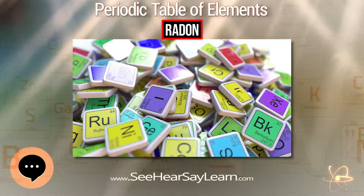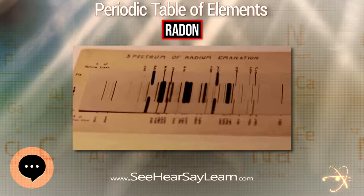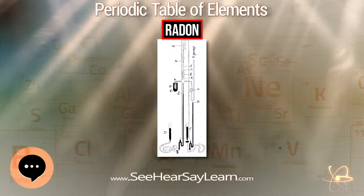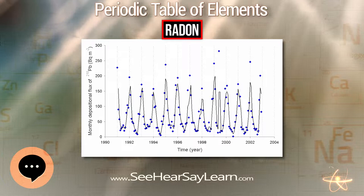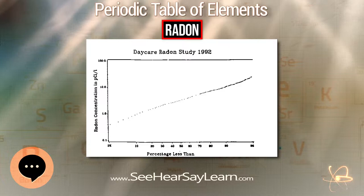Radon is a chemical element with symbol Rn and atomic number 86. It is a radioactive, colorless, odorless, tasteless noble gas. It occurs naturally in minute quantities as an intermediate step in the normal radioactive decay chains through which thorium and uranium slowly decay into lead and various other short-lived radioactive elements. Radon itself is the immediate decay product of radium.